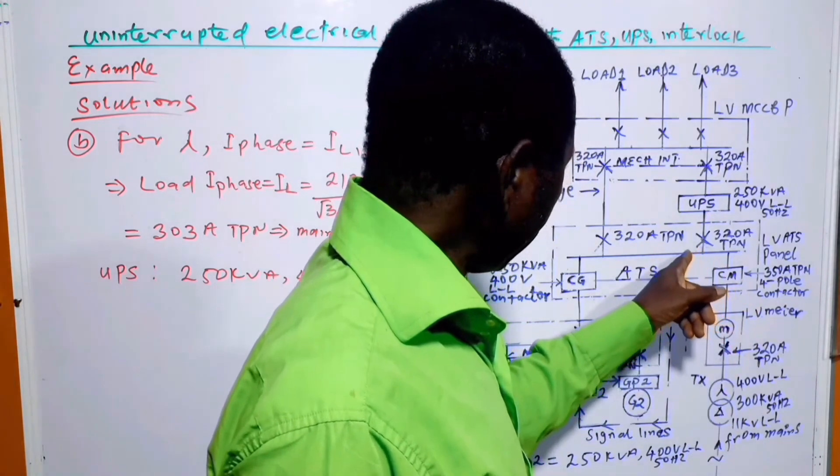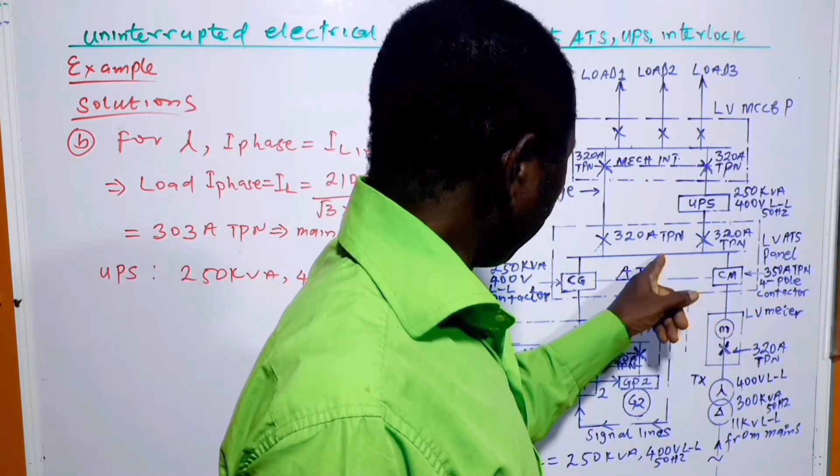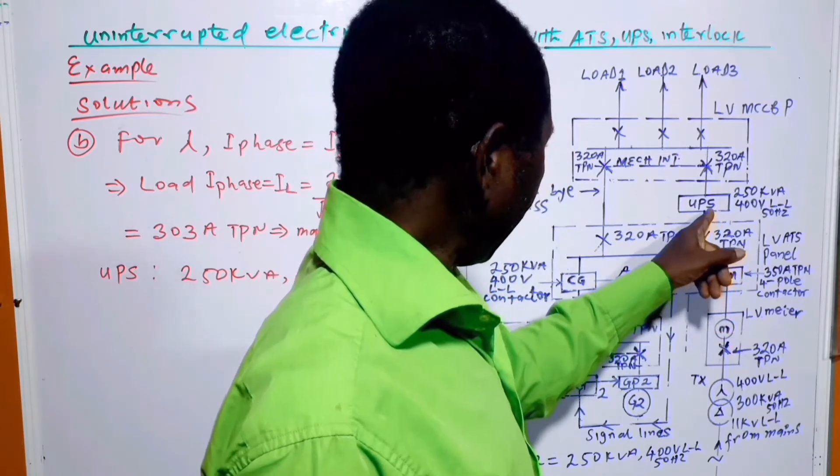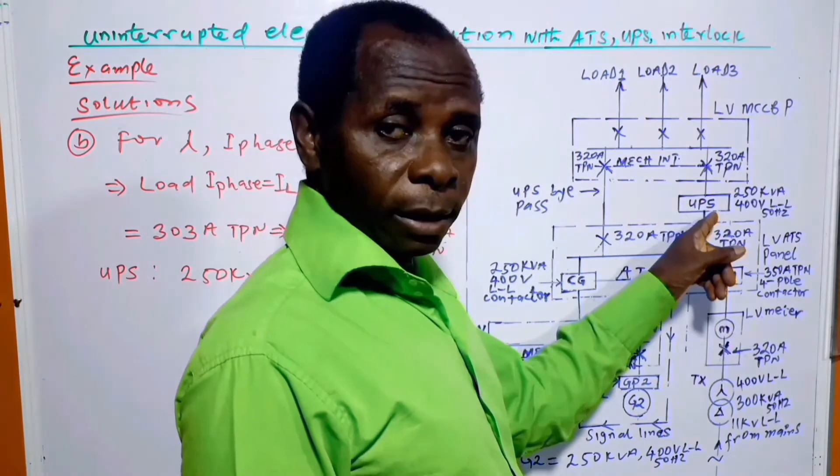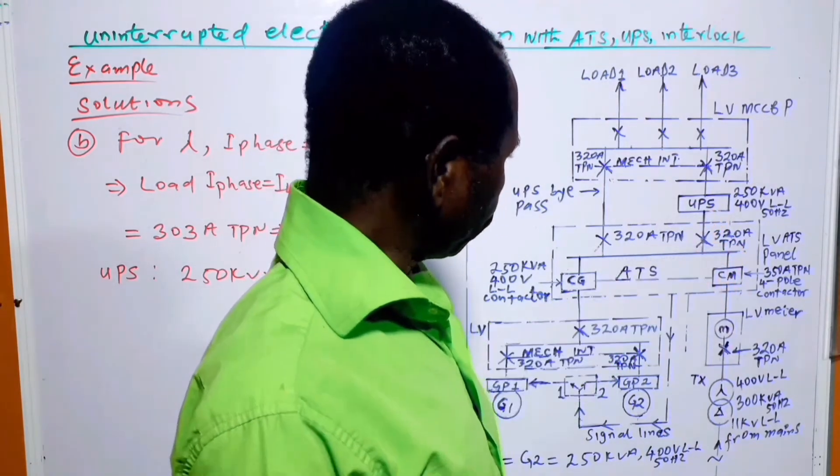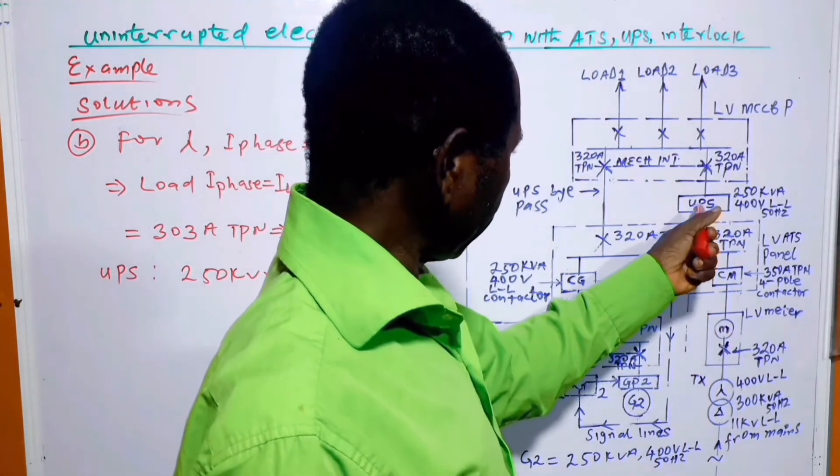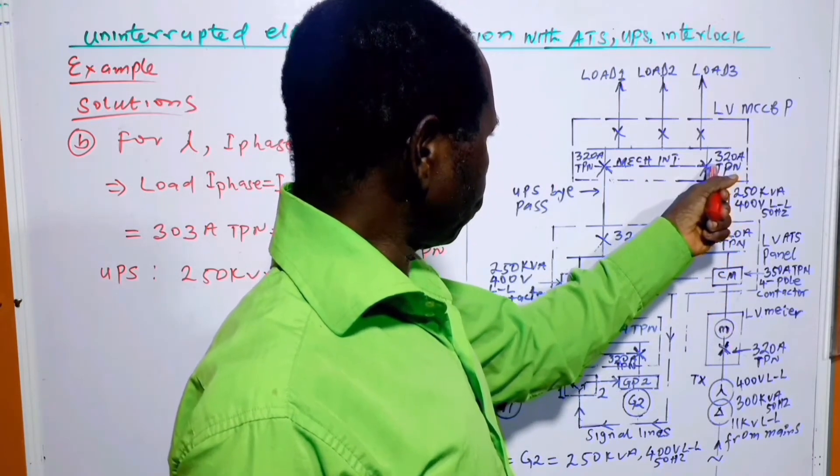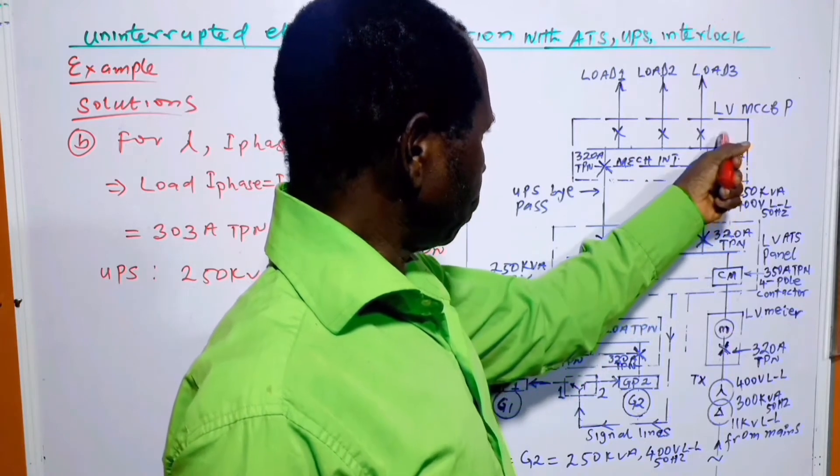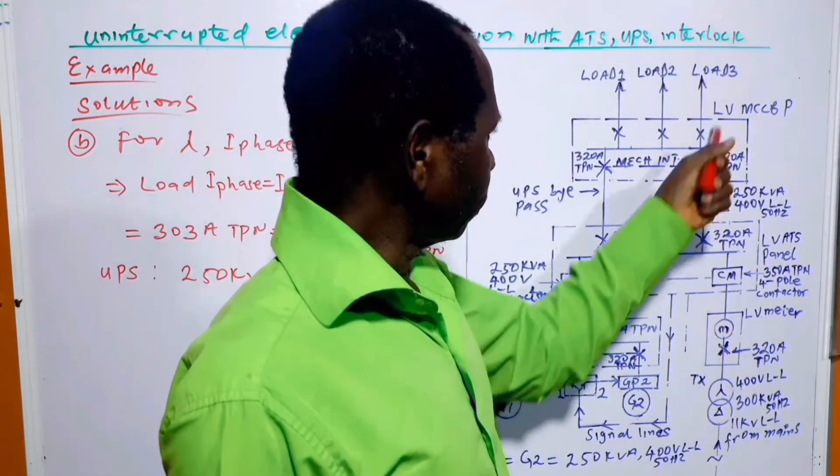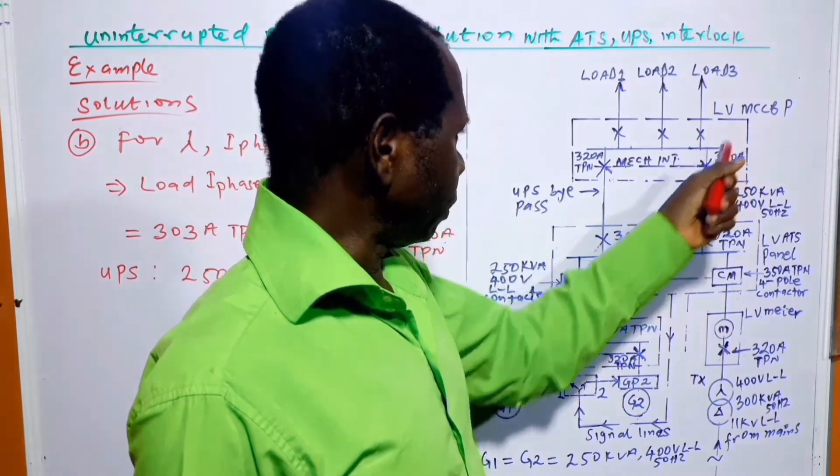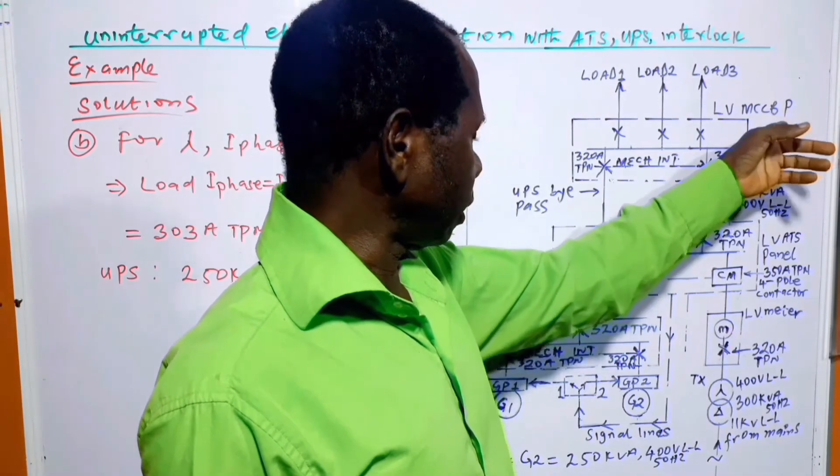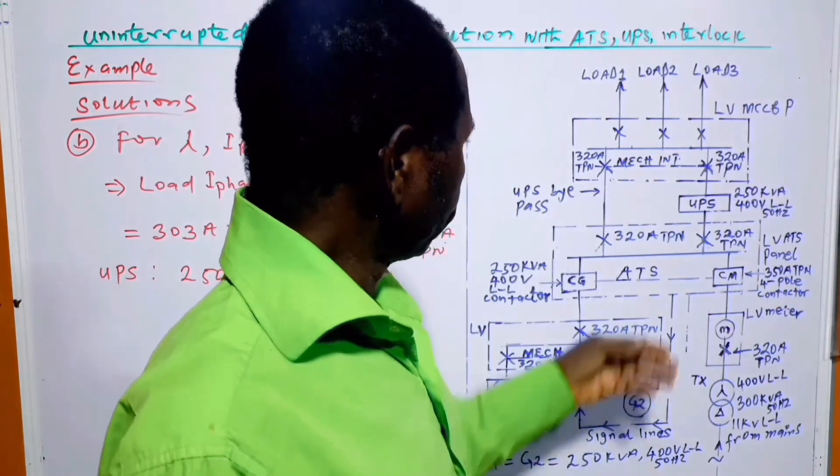So the mains delivers power to this common bus section and from here the power enters the UPS. The UPS, the uninterrupted power supply unit receives power. From here it goes into this panel, which is the load panel. It says LV, low voltage panel. It says LCCB panel. P means panel.